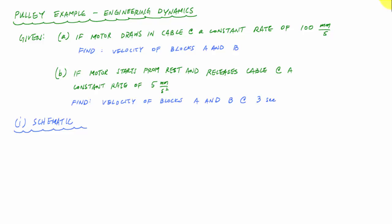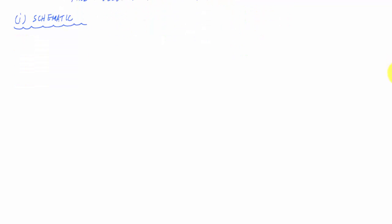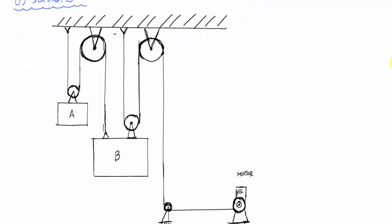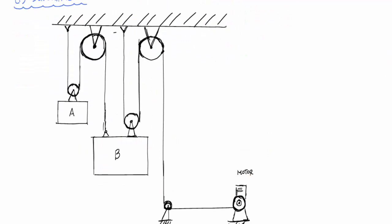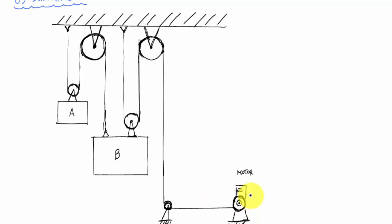Here's what the system looks like in my schematic. There are two cables: the first cable connects block A with block B, and the second cable connects the motor and block B. In a way, there are three particles in this problem.